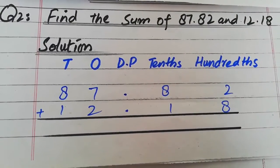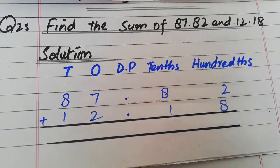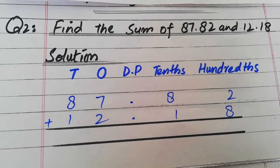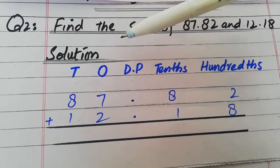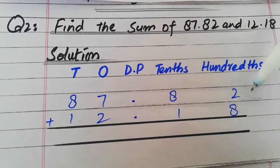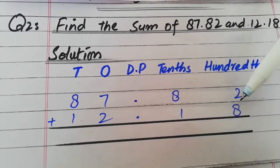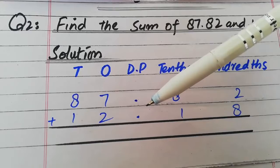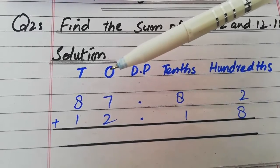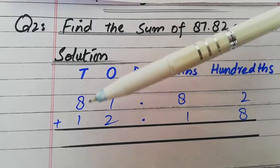Okay, we are going to start question number two: find the sum of 87.82 and 12.18۔ آپ نے کیا کرنا ہے: ایک line چھوڑ کے solution لکھنا ہے، پھر 87.82 first لکھنا ہے اور 12.18 اس کی نیچے لکھنا ہے۔ Digits لکھو گے، point لکھنا ہے۔ اسی طرح place value لکھنی ہے: integral part — ones میں 7 and 2، tens میں 8 and 1۔